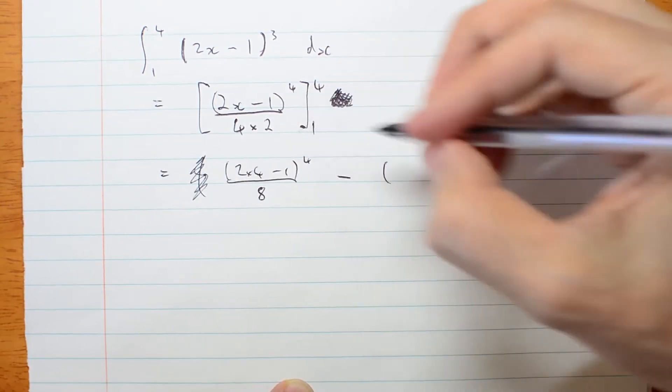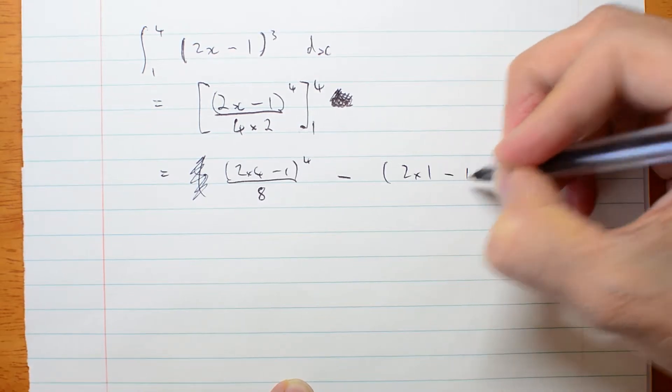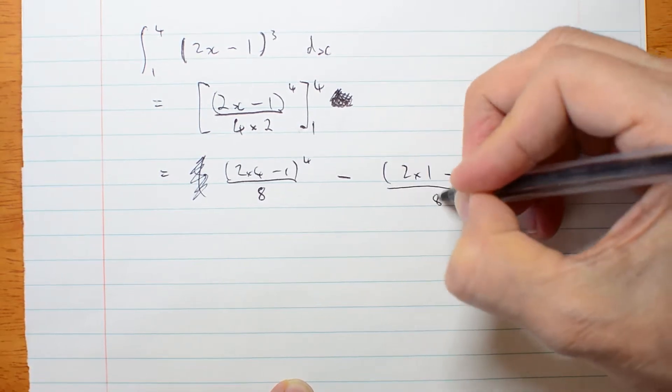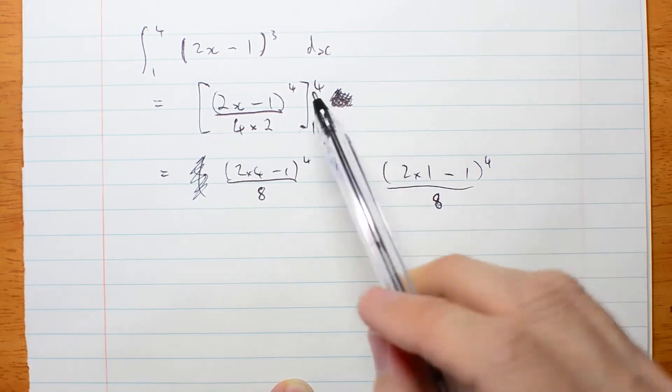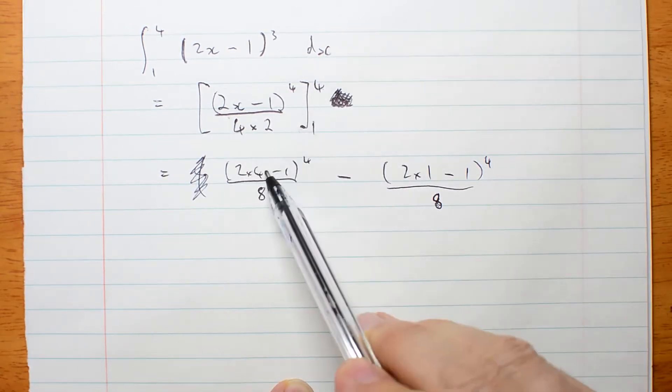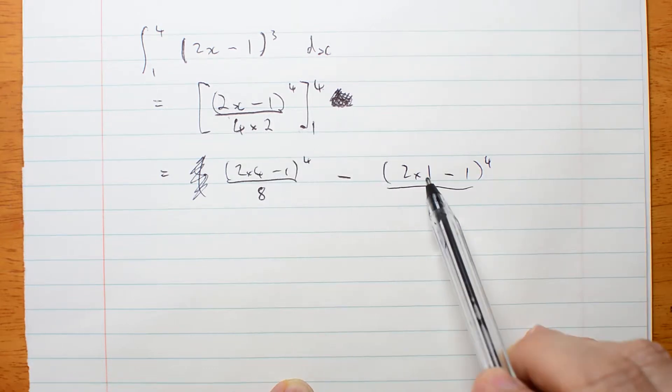Now putting 1 in. 2 times 1 minus 1 over 8, oh sorry, to the power of 4 over 8. Put in x equals 4 and then put in x equals 1.